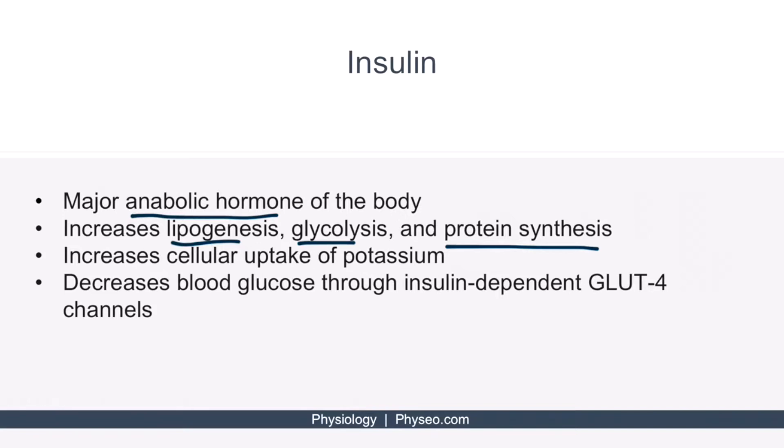Insulin also works by increasing the cellular uptake of potassium, which will be important when we discuss diabetic ketoacidosis. And finally, insulin translocates GLUT4 vesicles from the cytoplasm to the cell surface, which allows cells to rapidly absorb glucose. So in this way, insulin causes blood glucose levels to decrease.